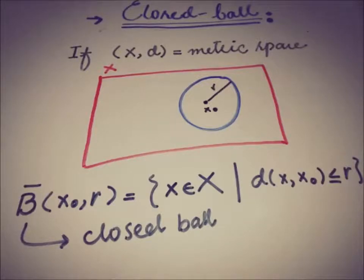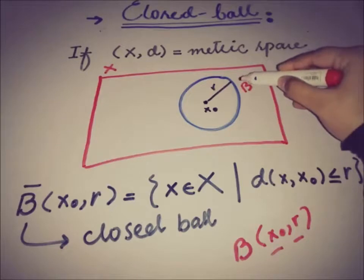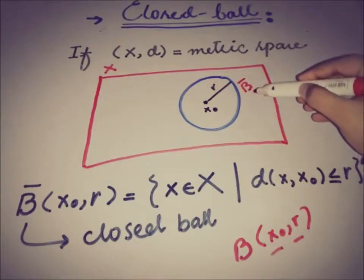And we represent this closed ball with B bar, where the open ball was represented only by B. B of x₀ and r, that is centered at x₀ with radius r. So this is B bar, that is a closed ball.